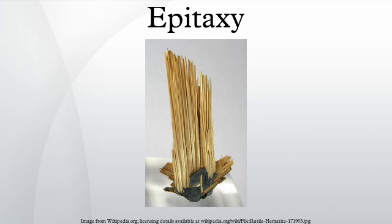An epitaxial layer can be doped during deposition by adding impurities to the source gas, such as arsine, phosphine, or diborane. The concentration of impurity in the gas phase determines its concentration in the deposited film. As in chemical vapor deposition, impurities change the deposition rate. Additionally, the high temperatures at which CVD is performed may allow dopants to diffuse into the growing layer from other layers in the wafer. Dopants in the source gas, liberated by evaporation or wet etching of the surface, may also diffuse into the epitaxial layer. The dopant profiles of underlying layers change as well, though not as significantly.